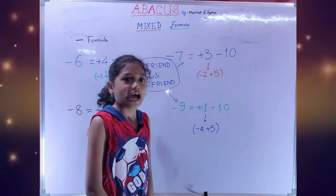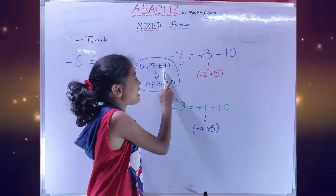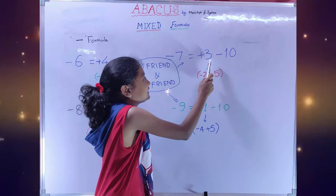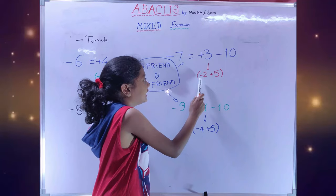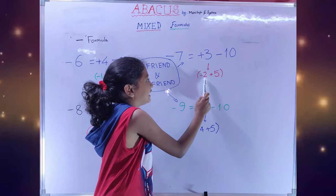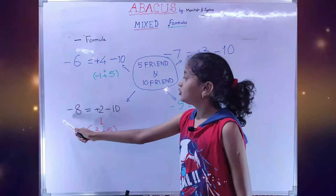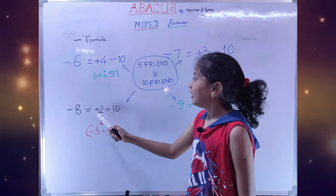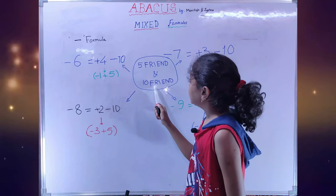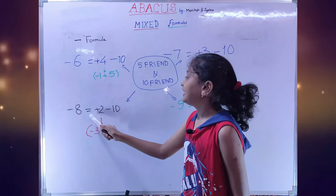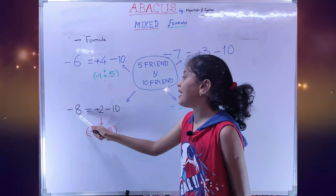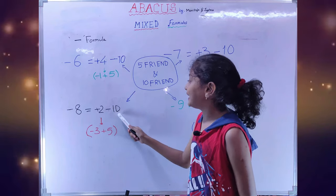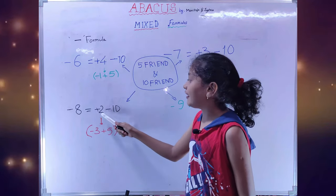When we don't have plus 3 to add, we will use 5 friends. 5 friends: plus 3 is minus 2 plus 5. To subtract minus 8, we will use 10 friends. 10 friends: minus 8 is equal to plus 2 minus 10.